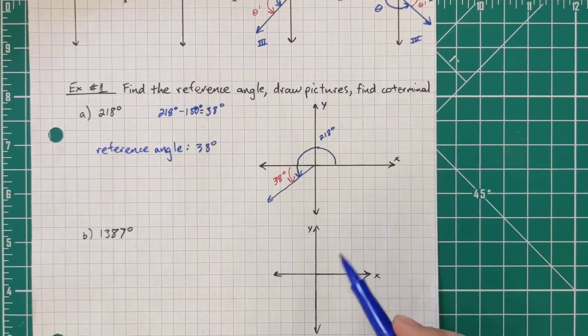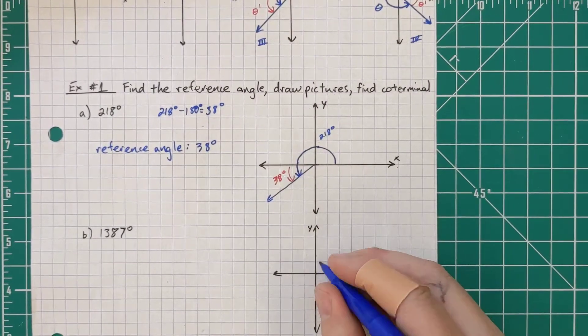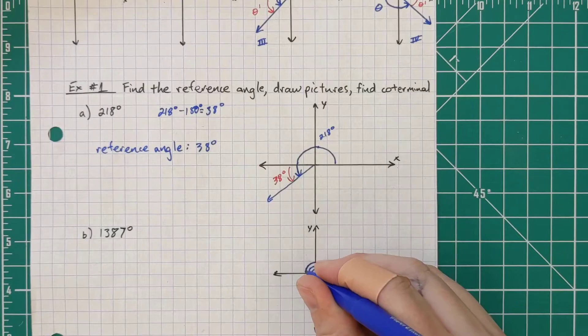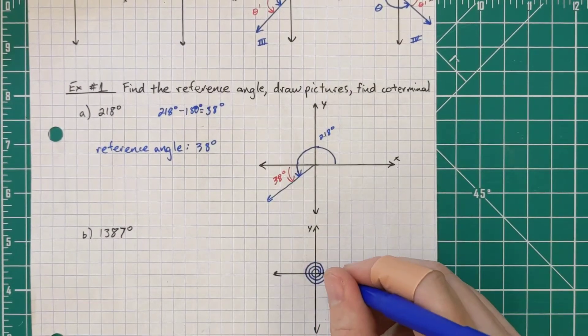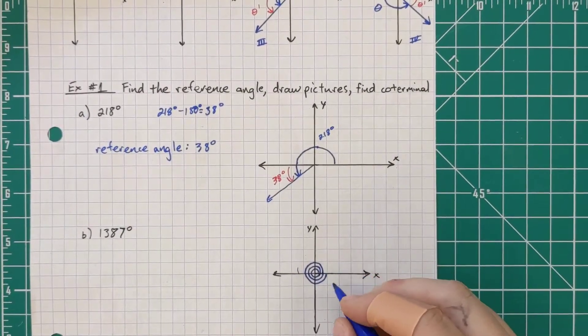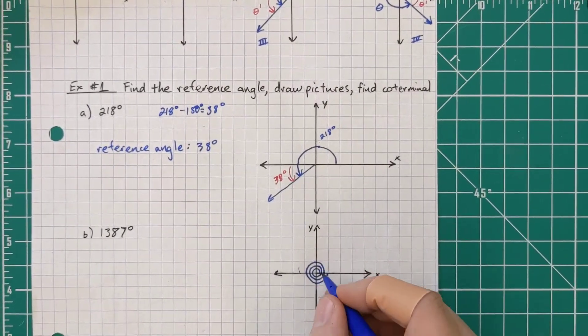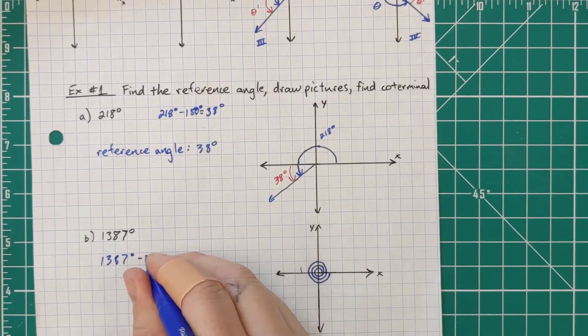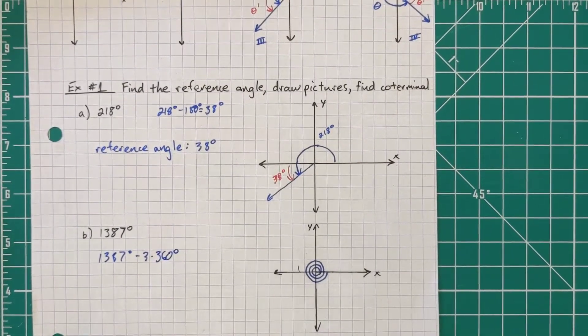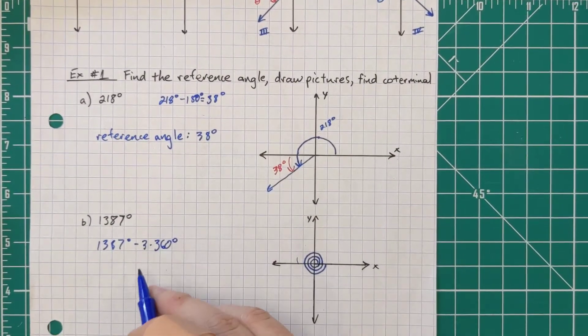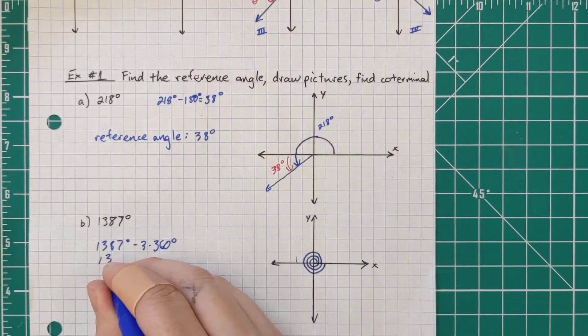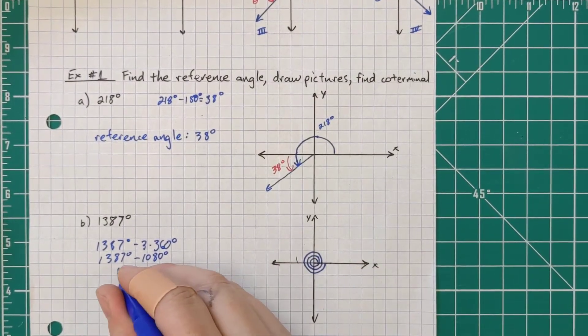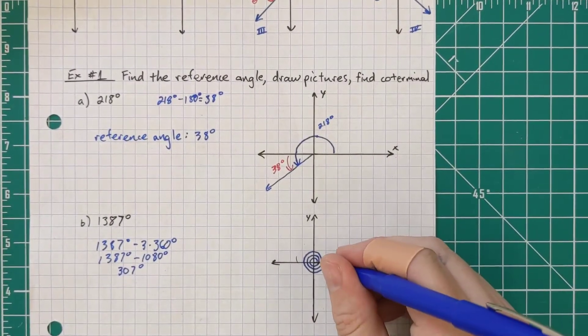All right, now 1,387. If we go all the way around, that's 360. So 360, if I keep going another time, I'm to 720. Another time, I'm at 1080. Now if I go another time, I'm going to pass. So this is really three times around, and then I'm finding my angle. To find my coterminal angle, which is really what we need first, is subtracting 360 degrees three times. So 360 times three is 1080. So now we get 307 degrees.